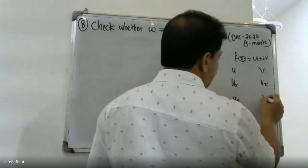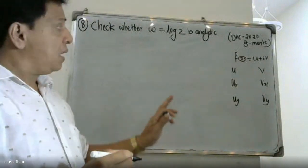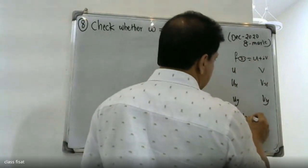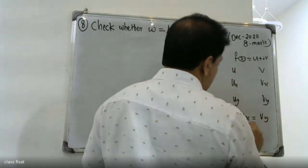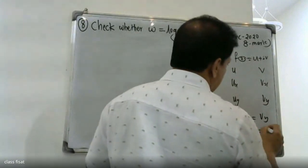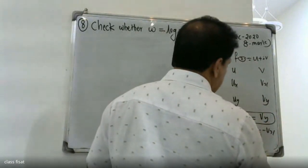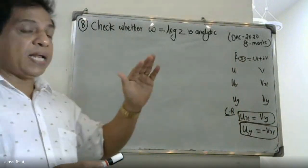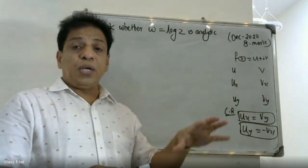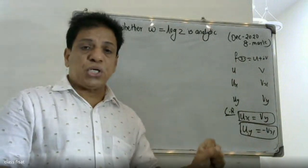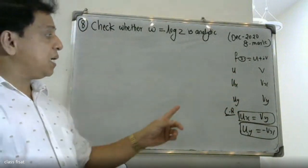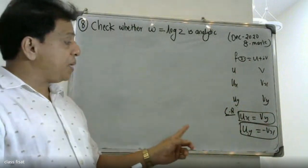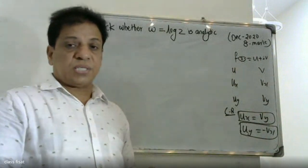We can look at this — the function is analytic on the domain. Ux is equal to Vy, and Uy is equal to minus Vx. These two Cauchy-Riemann equations must be satisfied by the function. The first Cauchy-Riemann equation is Ux equal to Vy; the second is Uy equal to minus Vx.